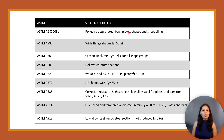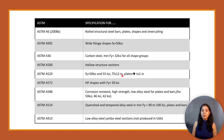In ASTM A992 we will find wide flange shapes with Fy equal to 50 ksi for all shape groups. ASTM A36 covers carbon steel with minimum Fy equal to 32 ksi for all shape groups. ASTM A500 covers hollow structural sections. ASTM A529 has Fy equal to 50 ksi and 55 ksi.